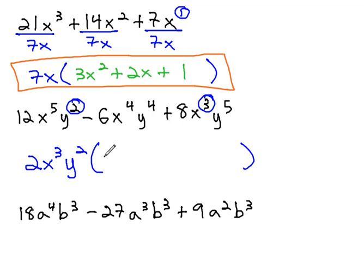12 divided by 2 is 6. x⁵ divide out 3 x's, we're left with x². y² divide out y², leaves none behind.